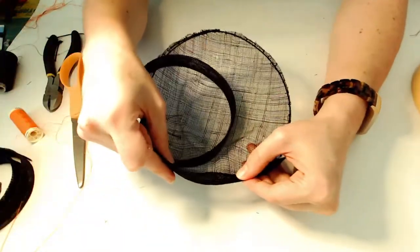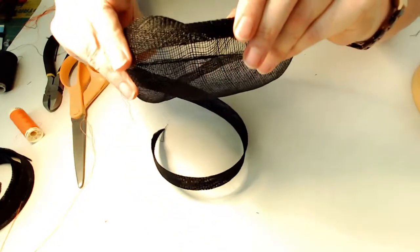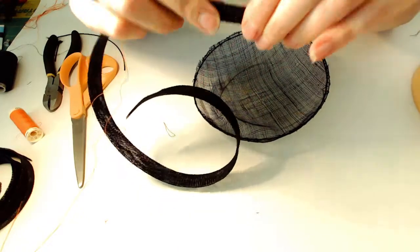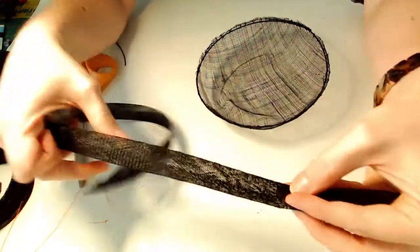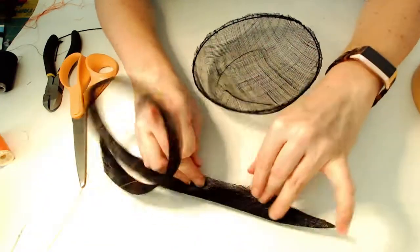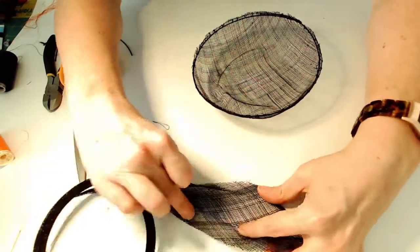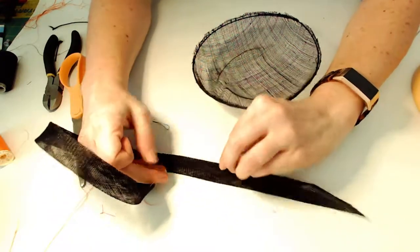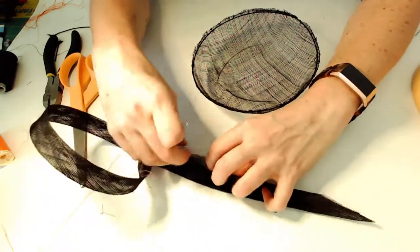So for stitching on this bias tape, I'm going to hold it. You want to take the tape and fold it in half. So it's this wide and it's actually wider. It's folded two times. So when you open it up, it's got two folds in it. And that's what creates the nice finished edge.